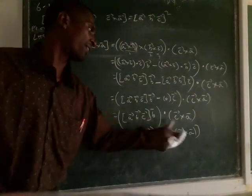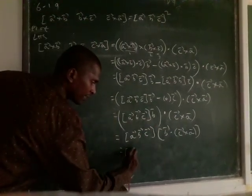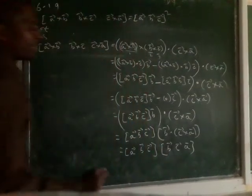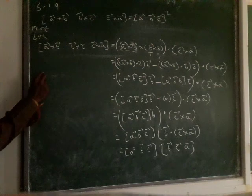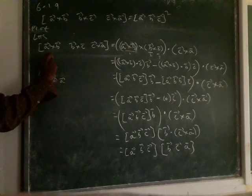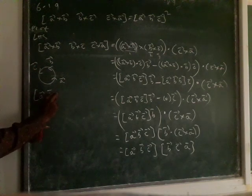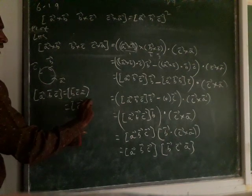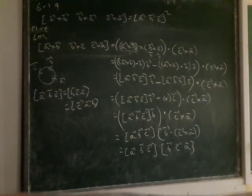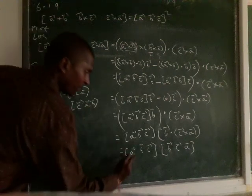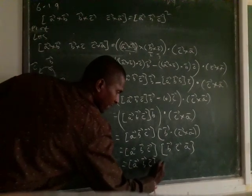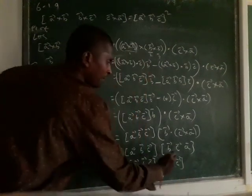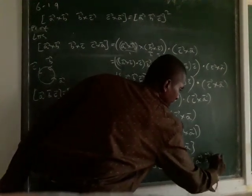So now that B vector, C vector, we can write as a box product: A vector, B vector, C vector. Now it becomes B, C, A. Now listen — in box product, we have the cyclic property. So A vector, B vector, C vector — you can write A, B, C equal to B, C, A, which is equal to C, A, B. So all three combinations are equal. So instead of B, C, A, we can write A, B, C. Already we have A vector, B vector, C vector. Then instead of B, C, A, we can write A vector, B vector, C vector. When you multiply, it becomes squared. So A vector, B vector, C vector squared.